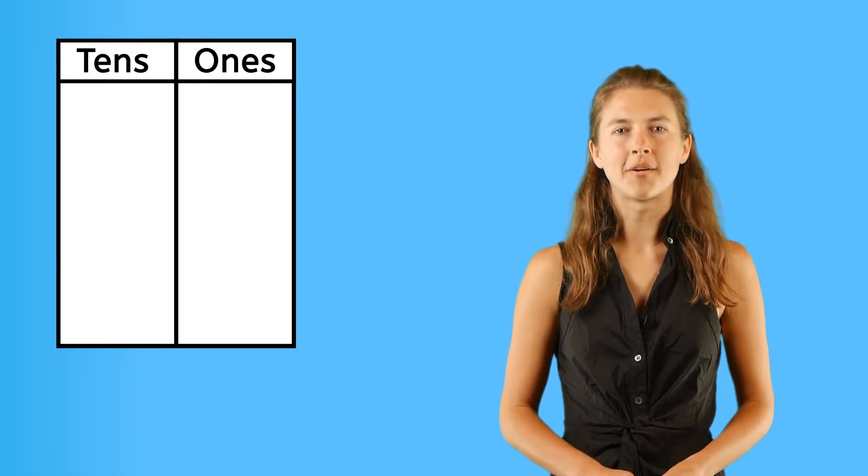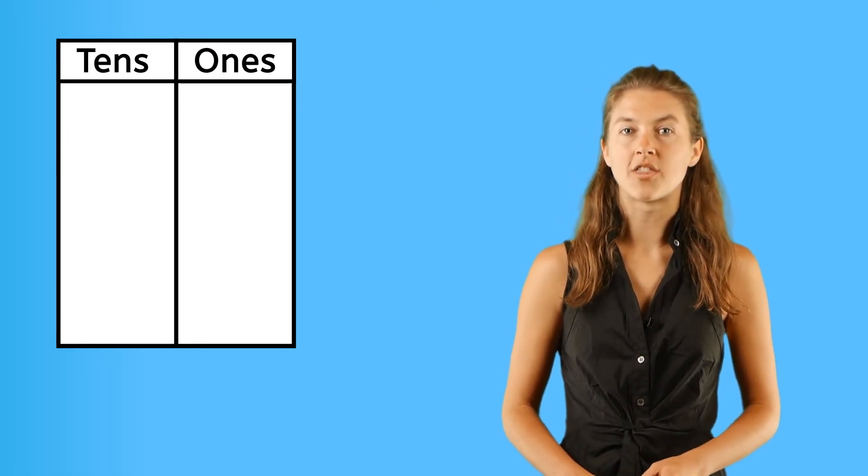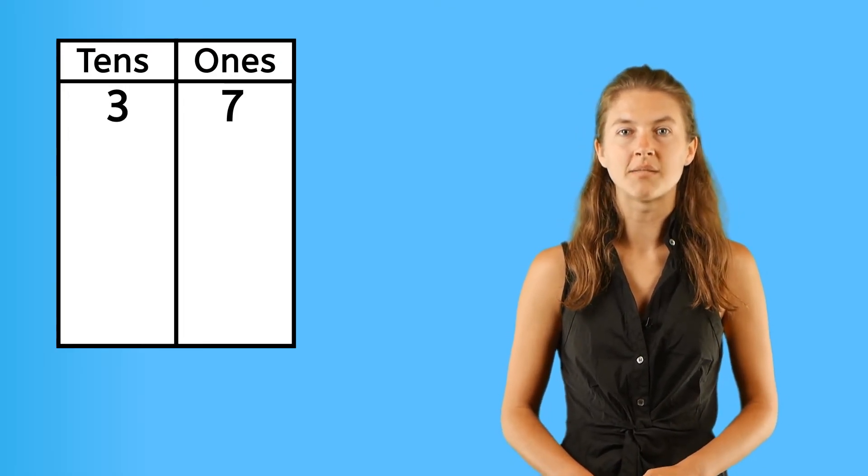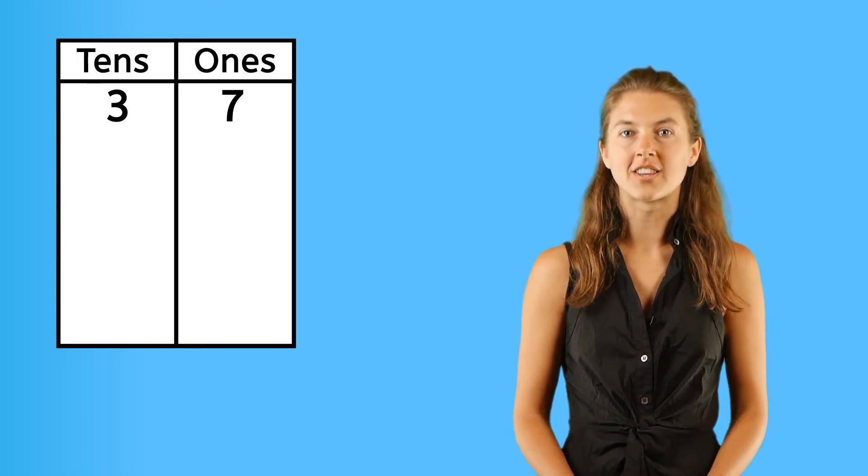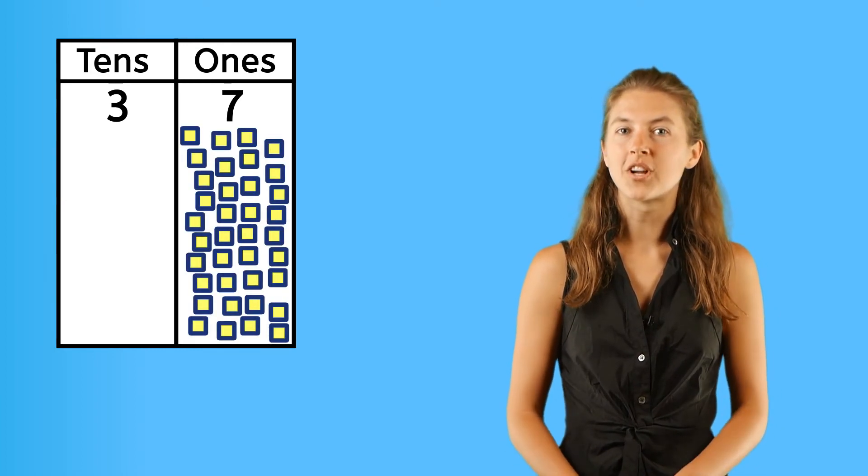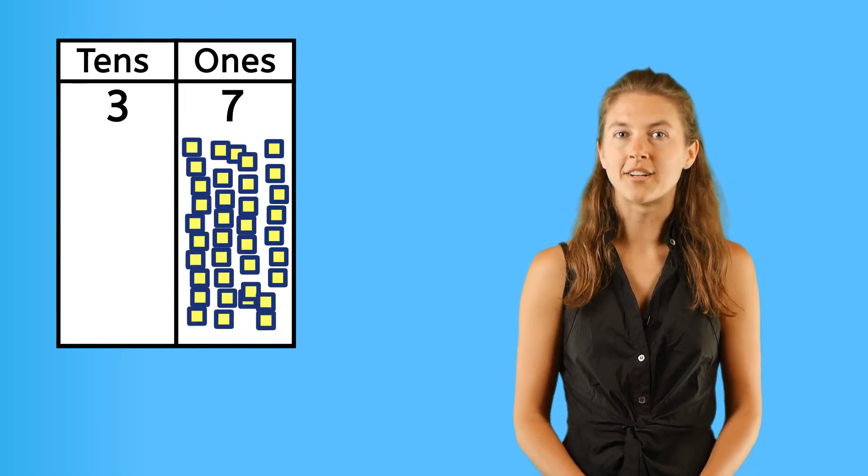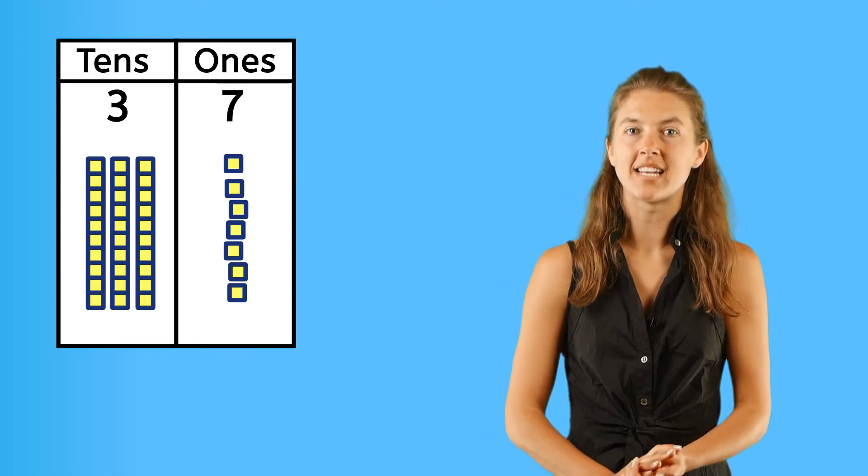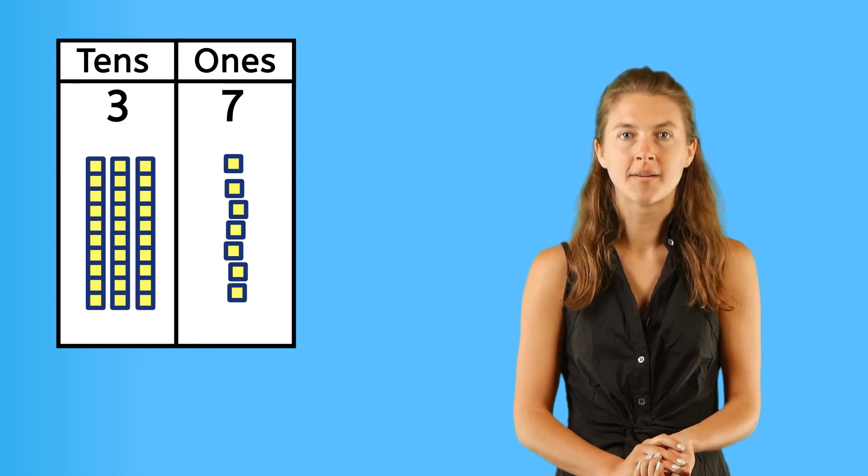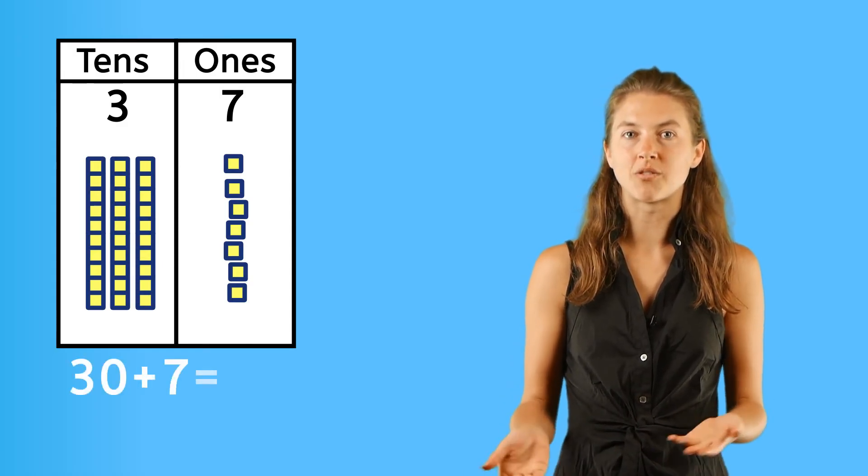Let's try one more number. How would we represent thirty-seven on this chart using base ten blocks? Well, thirty-seven means there are thirty-seven units. But thirty-seven units grouped into a pattern of ten means there are three groups of ten plus seven individual units, like this. Thirty plus seven equals thirty-seven.